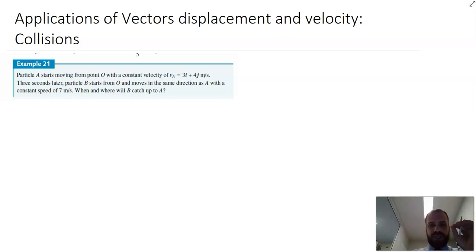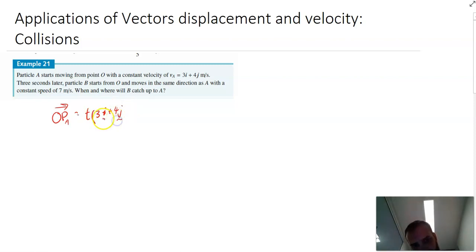So we're going to want position vectors for both of these particles. Now, a position vector for the first particle, particle A. Let's think about what that looks like. The origin to particle A is going to be equal to the amount of time it's traveling times its velocity vector. So T times 3i plus 4j. So there's a position vector for particle A.